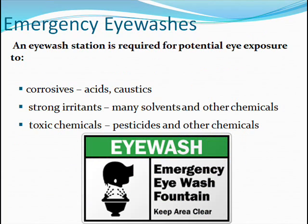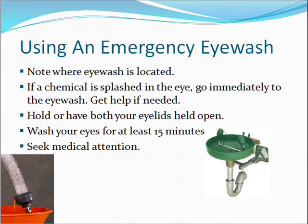Emergency eye washes. An eye wash station is required for potential eye exposure to corrosives, acids or caustics, strong irritants, many solvents and other chemicals, toxic chemicals, and pesticides. When using an emergency eye wash: note where it is located. If a chemical is splashed into the eye, go immediately to the eye wash station — get help if needed. Hold both eyelids open, wash your eyes for at least 15 minutes, and seek medical attention.